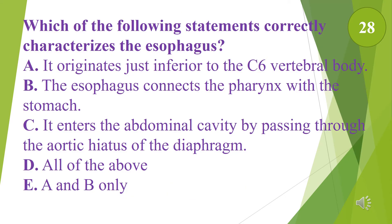Which of the following statements correctly characterizes the esophagus? A. It originates just inferior to the C6 vertebral body. B. The esophagus connects the pharynx with the stomach. C. It enters the abdominal cavity by passing through the aortic hiatus of the diaphragm. D. All of the above. E. A and B only. The answer is E, A and B only.